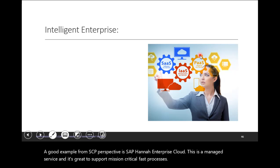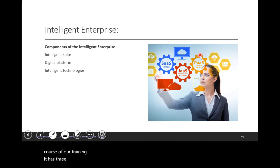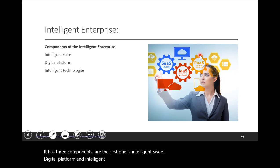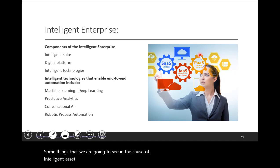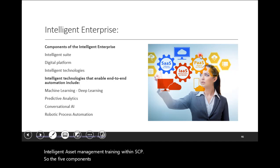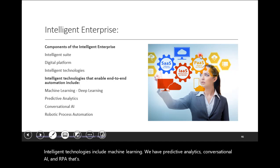I'm going to mention Intelligent Enterprise, as this is something we are going to see throughout our training. It has three components: Intelligent Suite, Digital Platform, and Intelligent Technologies. These are things we will see in the course of Intelligent Asset Management training within SAP. The five components of Intelligent Technologies include machine learning, predictive analytics, conversational AI, and RPA — that's robotic process automation.